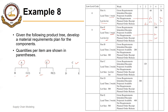Next we have B, which is the component of A. So for B the requirements will come from A — this 60 as well as this 70. There are 200 available, so in week 2 after meeting the requirement of 60, we will have 140 on hand. We will carry these 140 in week 3 and after meeting those 70 in period 5 as well.